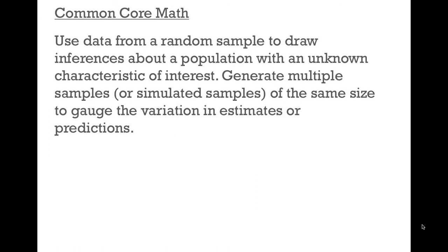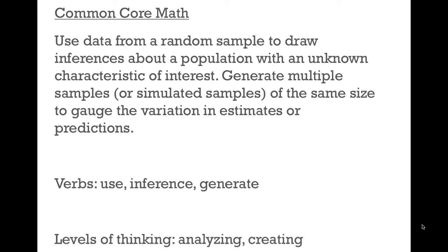Here's a Common Core Math example: 'Use data from a random sample to draw inferences about a population with an unknown characteristic of interest. Generate multiple samples or simulated samples of the same size to gauge the variation in estimates or predictions.' When you look at the verbs, it's asking you to use data to make inferences and to generate samples — analyzing through use and inferencing, and creating through generating. So if you're teaching this standard, are you having students actually physically generate samples? You have to teach to the verb and the level of thinking it requires.